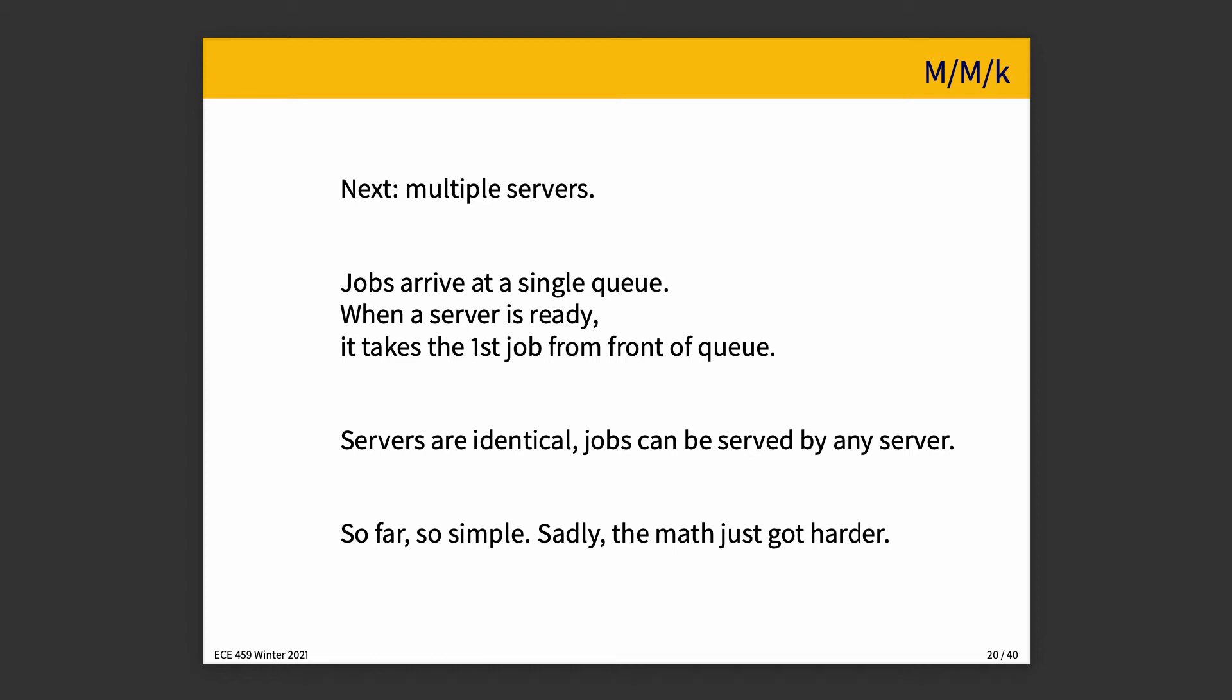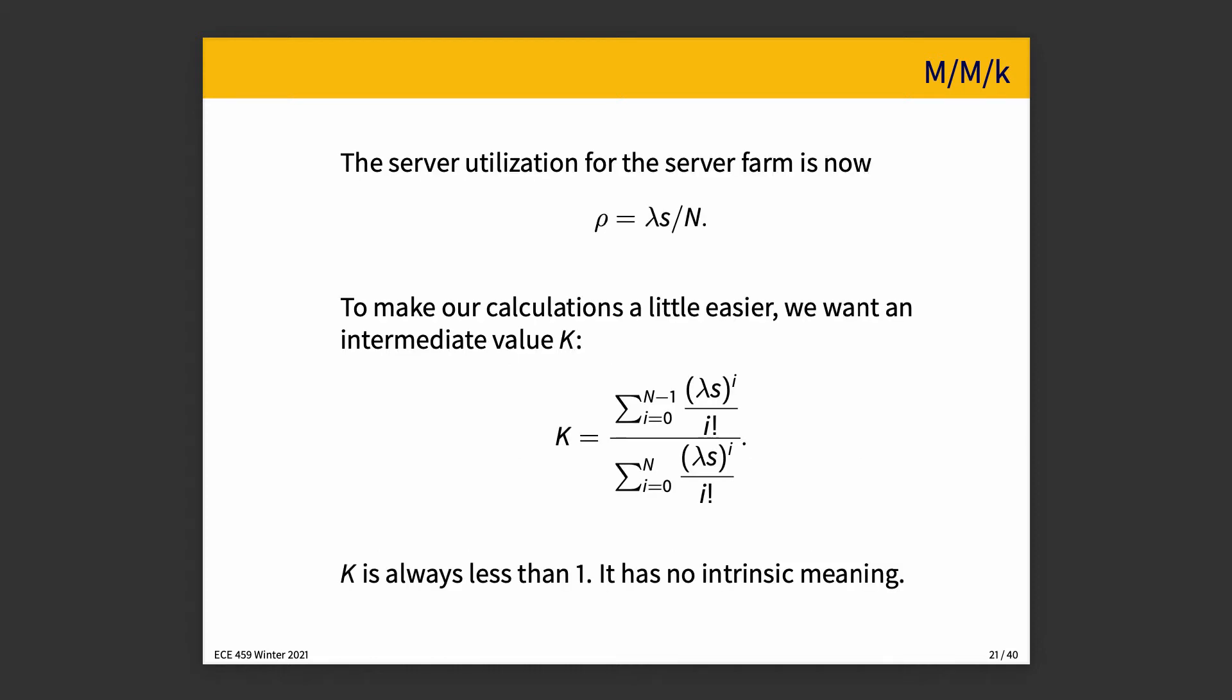Okay, let's face the music. So when we have multiple servers, the utilization is then rho is equal to lambda times S divided by N. Again, sanity check, that works. It makes sense that arrivals and service are now divided by the number of things we have to do the work. So all right, yeah, seems reasonable.